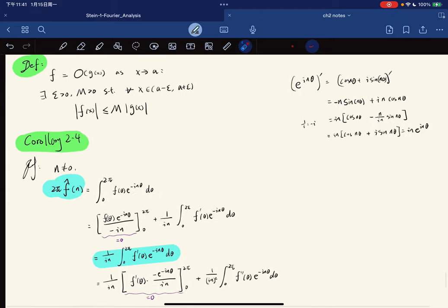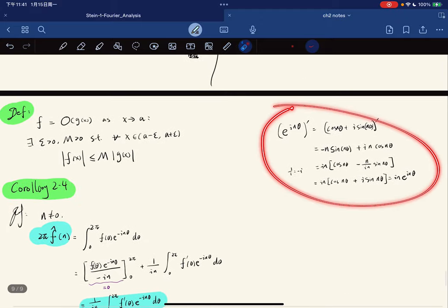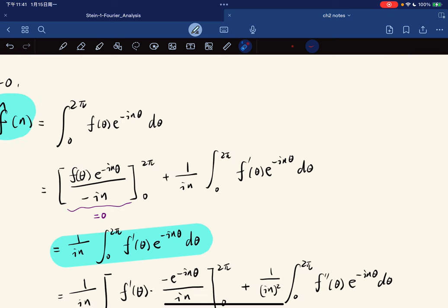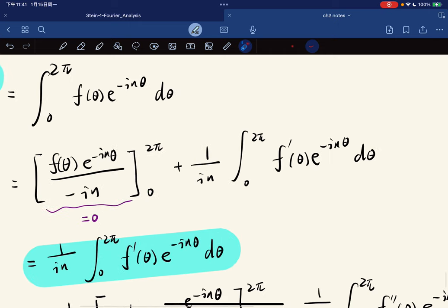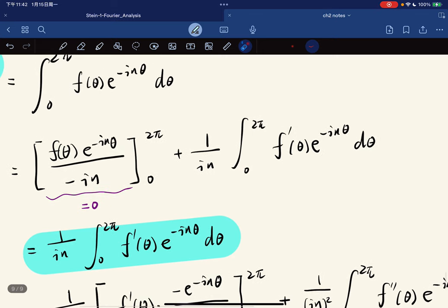And we just perform integration by parts because we have this over here. So there's a lot of computation hidden behind and is basically just break it up to real parts and imaginary parts. So this turns out to be zero because f is periodic.